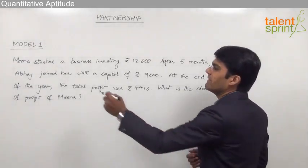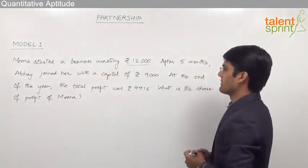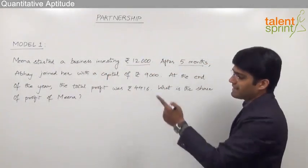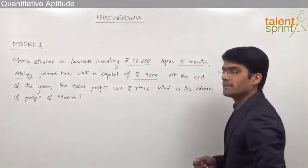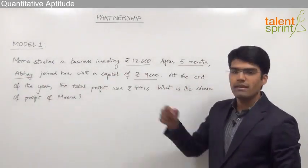As we can see here, the investment made by Meena is rupees 12,000. After 5 months, the second person Abhay joined her with a capital of rupees 9,000. That means investment made by Abhay is 9,000.